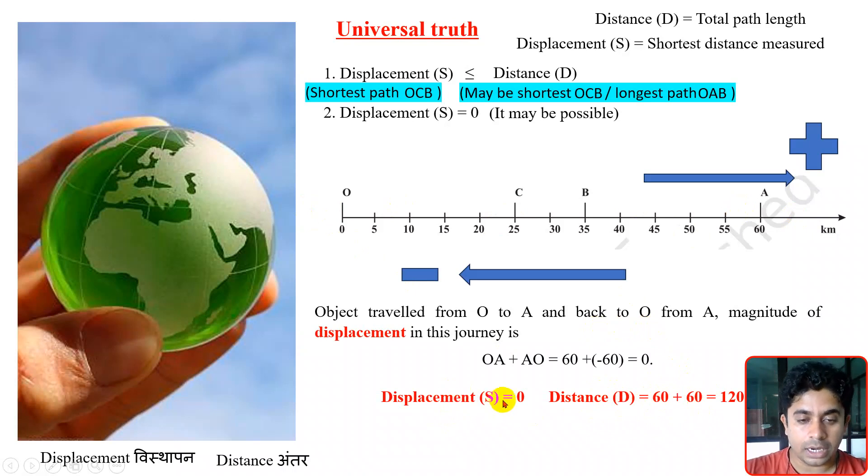So displacement is zero, but the distance corresponding to this displacement is not zero. The distance D corresponding to this displacement - the O to A and A to O journey that we have considered - for this, distance is a non-zero value. Displacement is zero.